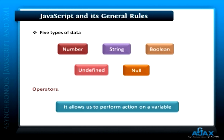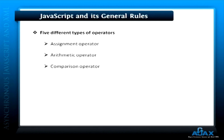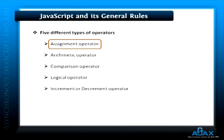Now let's see what an operator is. Operators allow us to perform actions on a variable. In JavaScript, we have five different types of operators: assignment operator, arithmetic operator, comparison operator, logical operator, and increment or decrement operators. Each type of operator allows us to perform different sorts of operations. For instance, the assignment operator helps us to assign values to variables.